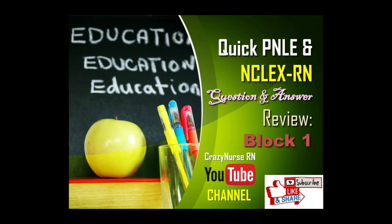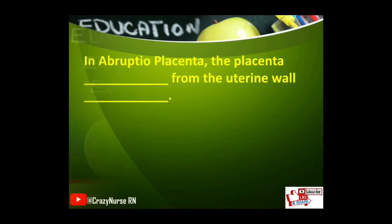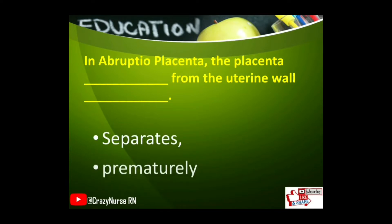Let's begin Block 1. In abruptio placenta, the placenta separates from the uterine wall prematurely.